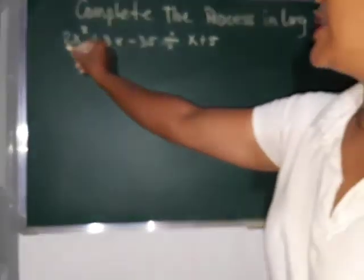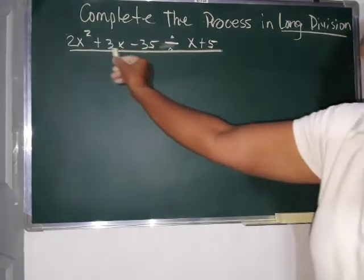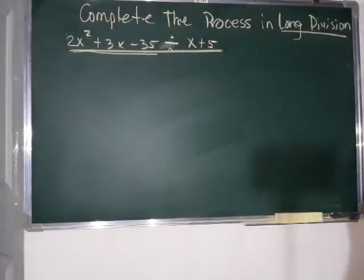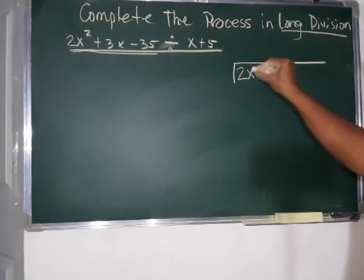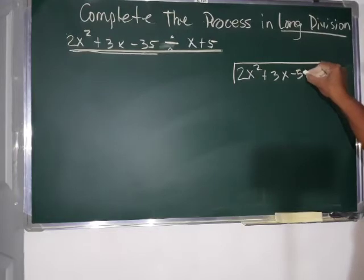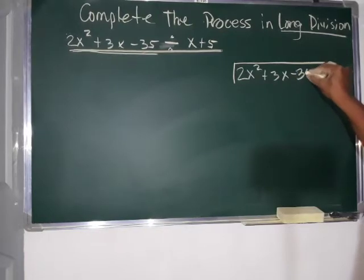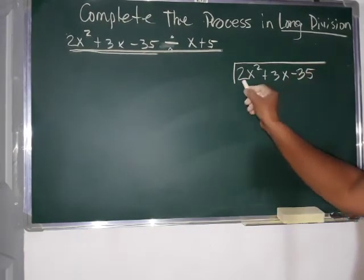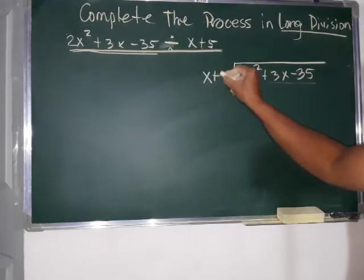So if you have this problem, 2x squared plus 3x minus 35 divided by x plus 5 using long division. So we will copy the dividend. This one, dividend, these are the numbers that is written inside the bar. Okay, so we have 2x squared plus 3x minus 35. Sorry. And again, this is our dividend and this is our divisor, x plus 5.